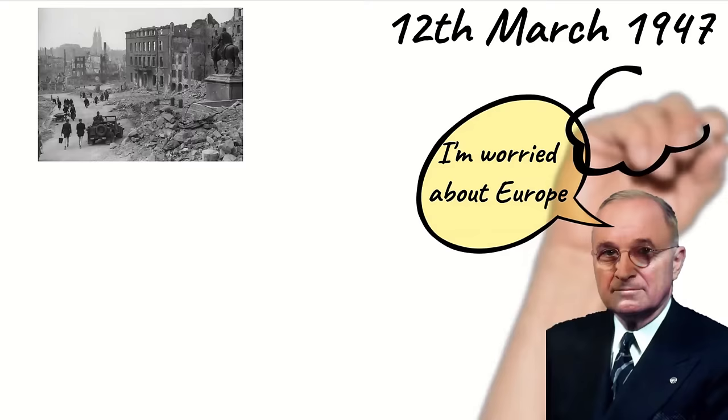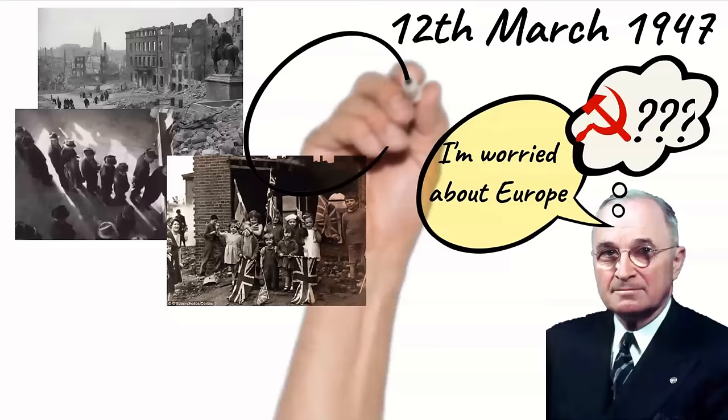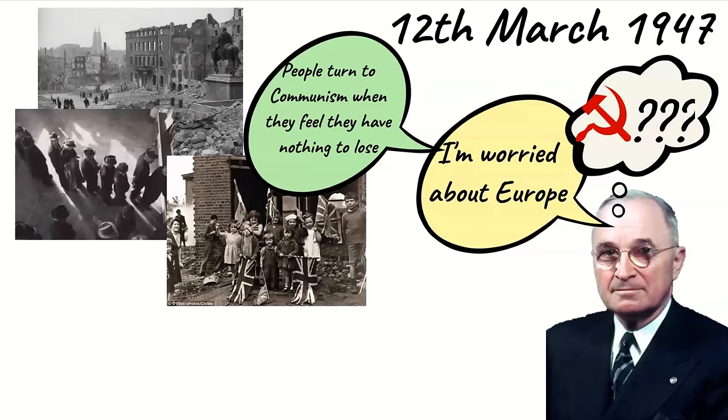Truman gave a speech on the 12th of March 1947 in which he outlined his concerns for Europe. Truman was worried that the effects of World War 2 would lead to countries becoming communist. Europe was destroyed. There was unemployment, poverty and hopelessness everywhere. Truman was worried that these conditions made the idea of communism more attractive.